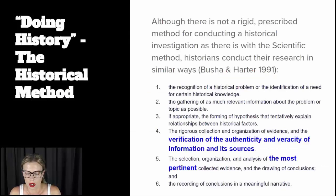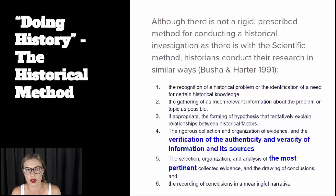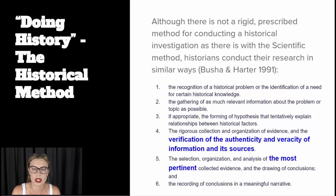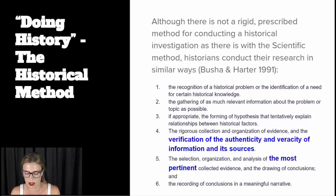The historical method. Although there is not a rigid, prescribed method such as in the scientific method where you follow a series of lockstep that everyone follows, historians do conduct their research in similar ways. They do identify that there's a problem that needs explaining — perhaps a motivation for a particular event is missing, or a particular group is underrepresented in history. So they recognise that there's a problem that needs further research.